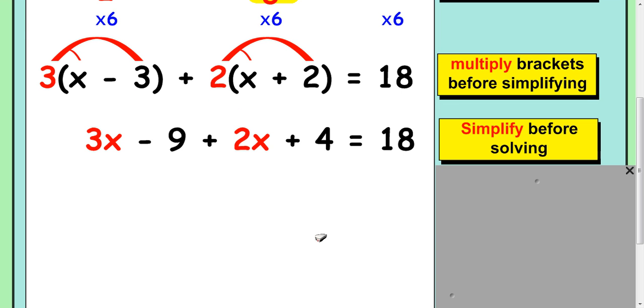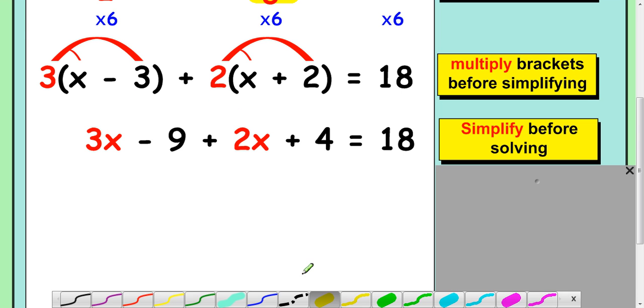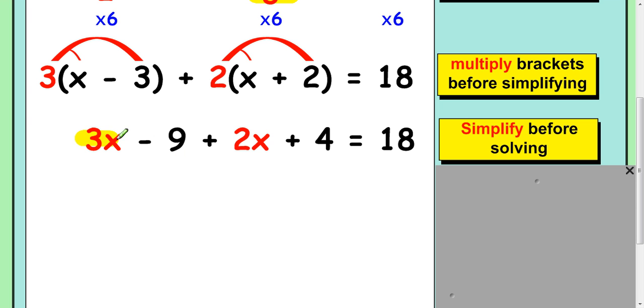So collecting up like terms, if we look at this, we've got a 3x and a plus 2x, so that's going to make 5x. And then we've got a negative 9 plus 4. So we can either do negative 9 plus 4 or 4 take away 9. And that comes to negative 5, or take away 5, equals 18.